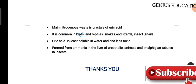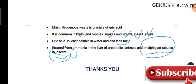Uricotelism is found in reptiles, snakes, lizards, and insects. Uric acid is less soluble in water and less toxic. It is formed from ammonia in the liver of uricotelic animals. In insects, the Malpighian tubules convert ammonia into uric acid, which is then excreted. Thank you for watching this video — please subscribe to the channel.